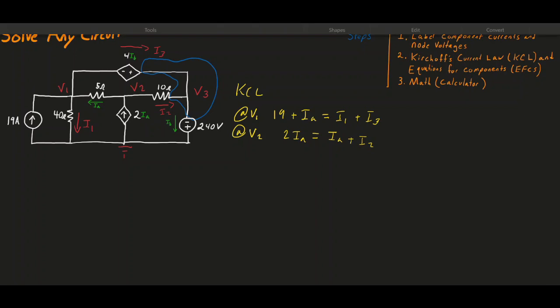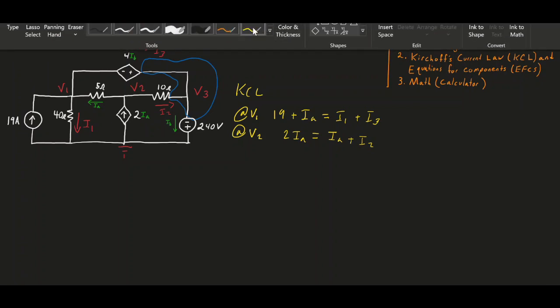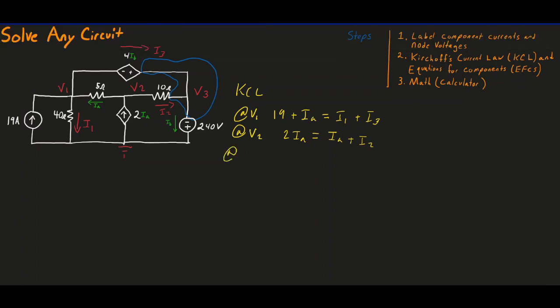This is all V3. Let's go ahead and write our KCL for V3. In this case, we have I2 and I3 pointing towards V3. So we'll say I2 plus I3 is equal to IB, which is pointing away from it. And that is it for KCL.